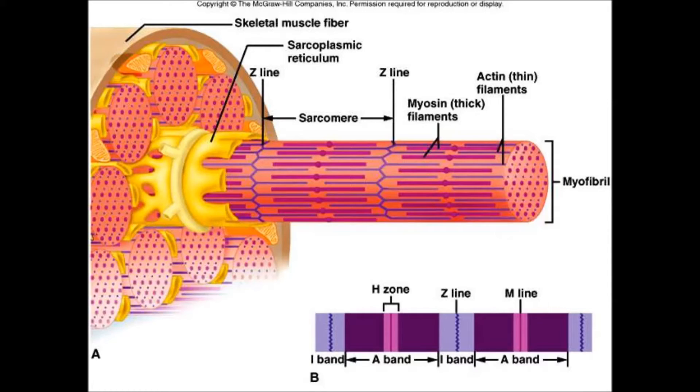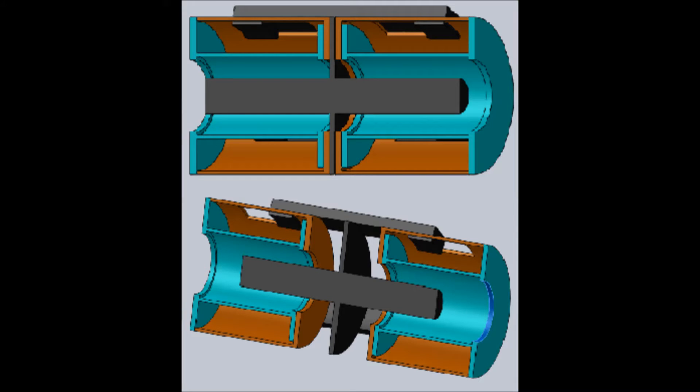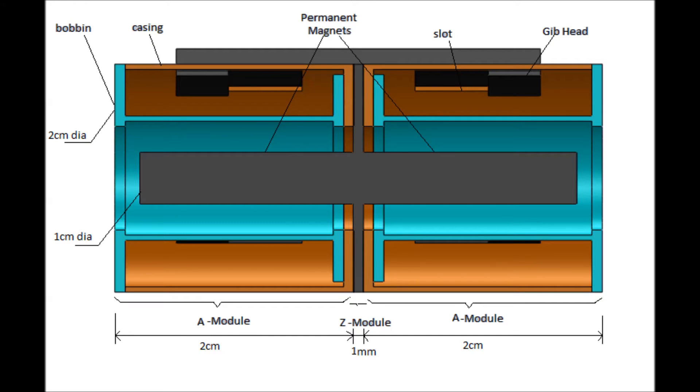Imitating this action of sarcomere units, artificial sarcomere units are created. These artificial sarcomere units copy the action of the sarcomeres, forming an artificial muscle.